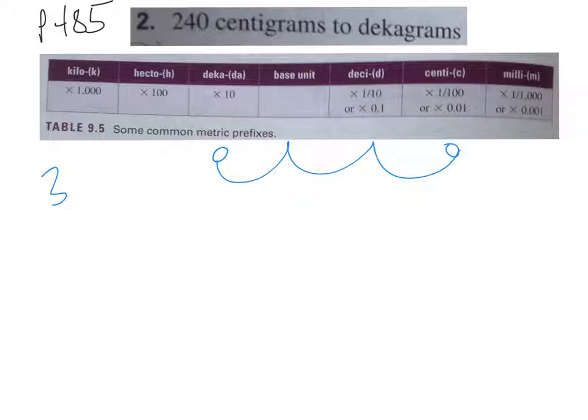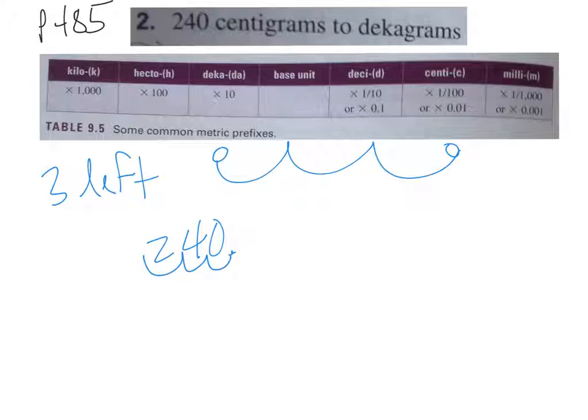Same page, number two. This time we have 240 centigrams and we want to go to decagrams. Centigrams is over here at centi, and decagrams is over here at deca. So we're going to have to go 1, 2, 3 times to the left. In our 240 centigrams, the decimal place is right here. We move it three times to the left, so we get 0.24 decagrams.